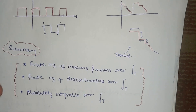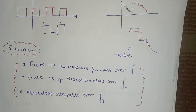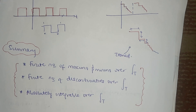In summary, the Dirichlet conditions are three. First, there must be a finite number of maxima and minima over the range of the period of time. Secondly, there must be a finite number of discontinuities over the range of time. And lastly, it must be absolutely integrable over the range of time. Hope the concept about the Dirichlet conditions has been demystified. It's quite easy to understand and memorize. Good luck — if you have any questions, feel free to share them in the comment section below and I'll be there to answer. Thanks.